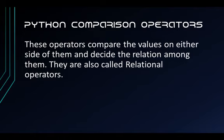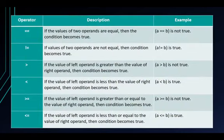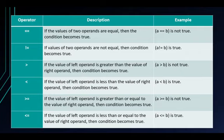Next are the comparison operators. These operators compare the values on either side of them and decide the relation among them. They are also called relational operators. There are 6 operators. The first is the equal to operator, which states that if the values of two operands are equal, then the condition becomes true. The not equal to operator states that if the values of two operands are not equal, then the condition becomes true.